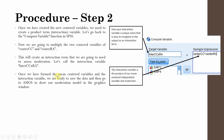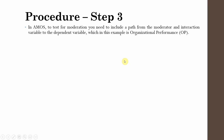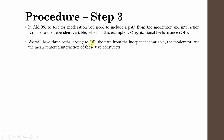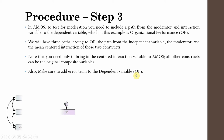Now we have the mean-centered variables — center CC, center RA — and the interaction variable. Step two is creating the interaction term by multiplying the centered IV with the centered moderator. In AMOS, to test moderation, you need to include a path from the moderator and the interaction to the dependent variable — organizational performance. We will have three paths leading to OP: from the independent variable, the moderator, and the mean-centered interaction. Make sure to add an error term to your dependent variable.